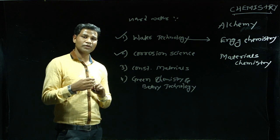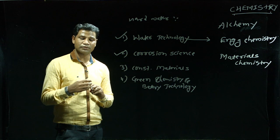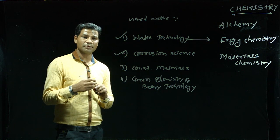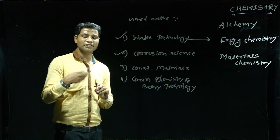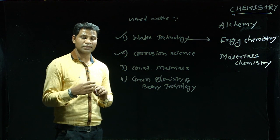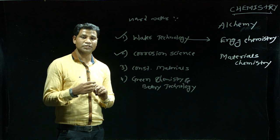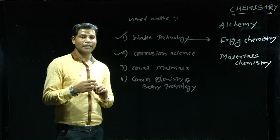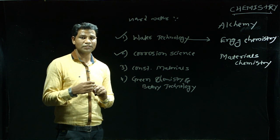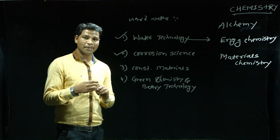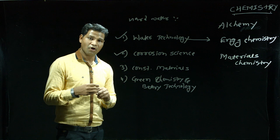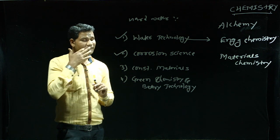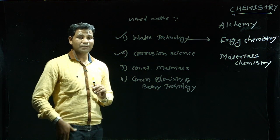Electrochemical theory of corrosion: the mechanism of electrochemical corrosion can be well explained by liberation of hydrogen and absorption of oxygen.